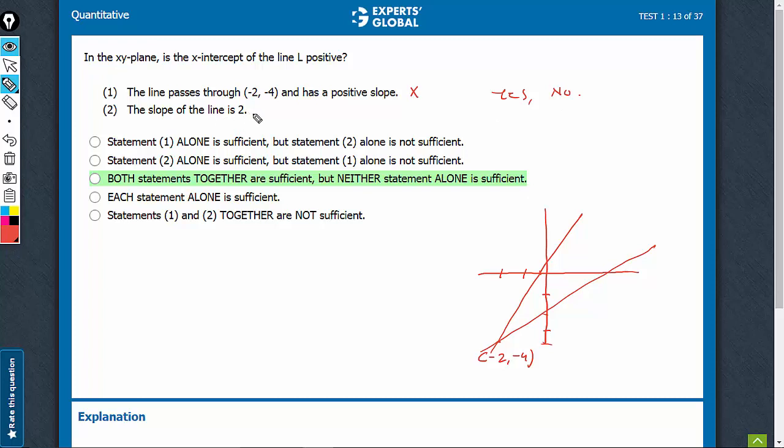Slope of the line is 2. So, only the slope is given, no coordinate has been given. So, alone, of course, it is not going to be sufficient.